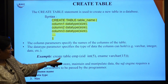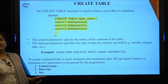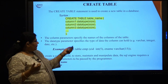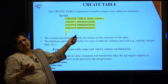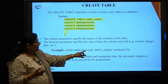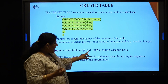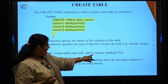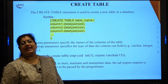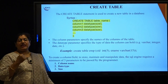Let us see an example. Depending on how many attributes — the degree of the relation — that many column names will appear. For example: CREATE TABLE EMP — where EMP is the name of the relation — with EID as integer of size 5 digits, and ENAME as VARCHAR(15). VARCHAR indicates it is a string type of data.